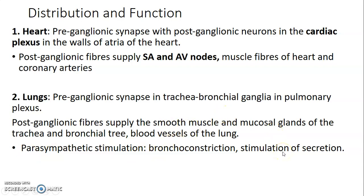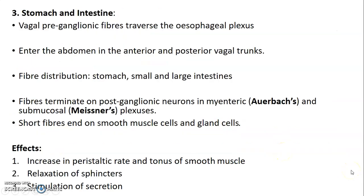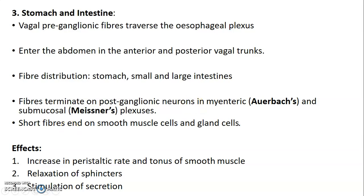The vagus also supplies parasympathetic innervation to the stomach and intestines. The preganglionic fibers from the dorsal vagal nucleus get to the esophageal plexus, then through the esophageal hiatus they enter the abdomen via the anterior and posterior vagal trunks, distributing to the stomach and small and large intestines. The fibers terminate on postganglionic neurons within the myenteric plexus (also called Auerbach's plexus) and the submucosal plexus (also called Meissner's plexus). Postganglionic neurons then terminate on smooth muscle cells and gland cells.